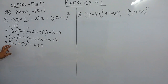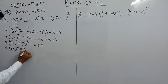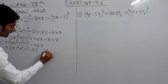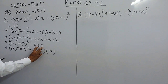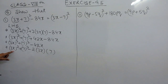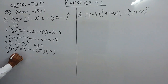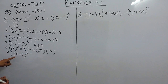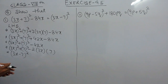Now if I consider this as a² + b² − 2ab, where a is 3x and b is 7, then 2×3x×7 gives 42x with a negative sign. So this has become a² + b² − 2ab. We know that a² + b² − 2ab equals (a − b) whole square, which is the same as the right hand side. So we have proved that the left hand side equals the right hand side.